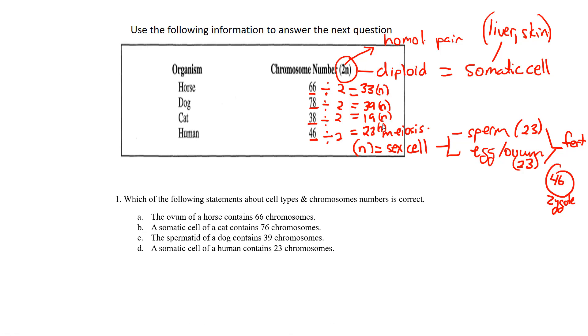Taking that into consideration, we're ready for the question now. It says which of the following statements about cell types and chromosomal number is correct. The ovum of a horse contains 66 chromosomes—well that's not true because the diploid somatic cell, their liver cell, heart cells, contain 66, so that can't be true. The somatic cell of a cat contains 76—we can see that the cat somatic cell, you need to know that diploid means somatic, only contains 38, so that can't be true. Don't double that—this is already giving the somatic diploid state of all those different organisms.